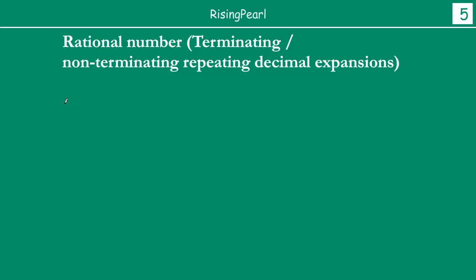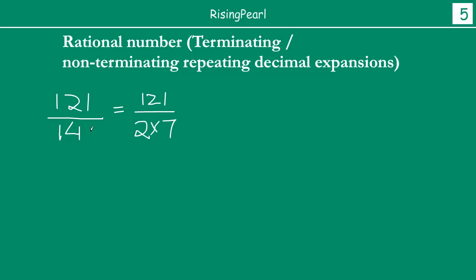Let's take probably one more example. Let's do 121 divided by 14. 121 is an odd number and 14 is an even number — 14 is nothing but 2 times 7. We are trying to figure out what will happen if q is not of the form 2 to the power m times 5 to the power n. Since 14 has a factor of 7, this qualifies as such a case.